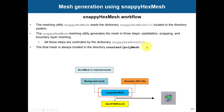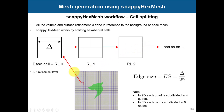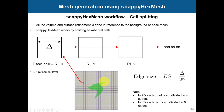How snappyHexMesh works: you generate the background mesh, insert your geometry, and all refinement is done by subdividing hexes - splitting one quad into four, then into 16, and so on. This is why you need hexes in the region of the geometry. There is an equation showing the hex size requirement with refinement level N - you can get an idea of the hex size according to your refinement level.